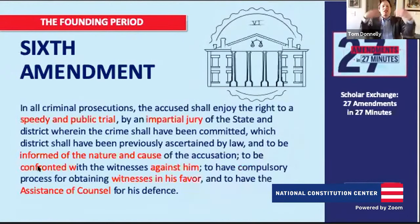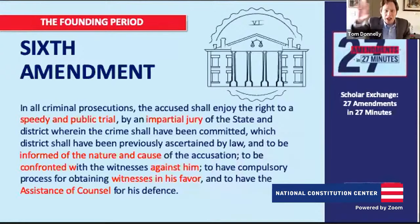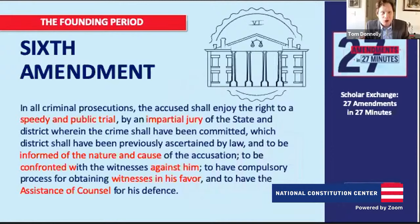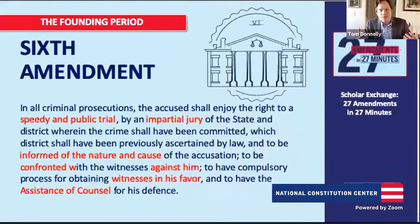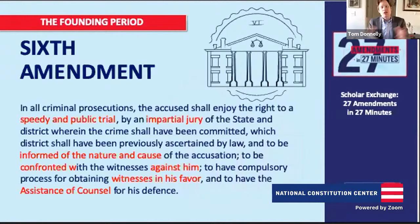The Sixth Amendment layers more protections for people accused of crimes, reflecting the founding generation's concern about government prosecutors and judges abusing power and wrongfully convicting people. It brings in the right to a jury trial in criminal cases — speedy, with an impartial jury of your peers. The government has to prove its case in front of people like you. The other major right here is the right to counsel, from the famous case Gideon v. Wainwright — ensuring that people aren't convicted because they're poor and can't afford lawyers, but only because they're actually guilty.